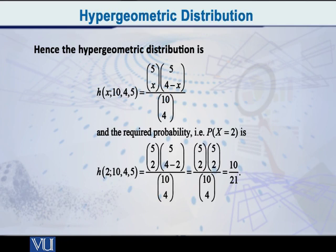Now it is in front of you on the screen. The probability that capital X is equal to 2 is equal to 5 C 2 multiplied by 5 C 4 minus 2 divided by 10 C 4. And what is the final answer that you get? It is 10 by 21, a little less than 50%.